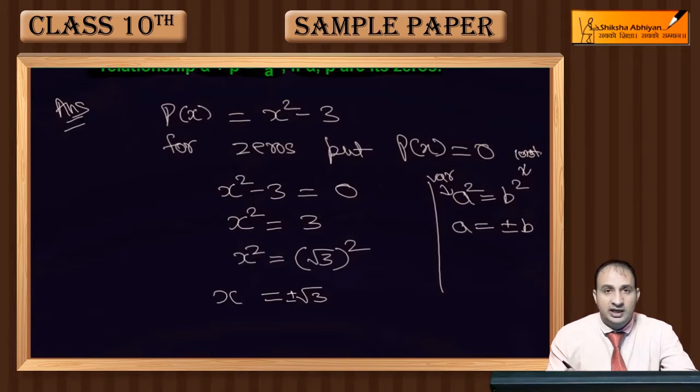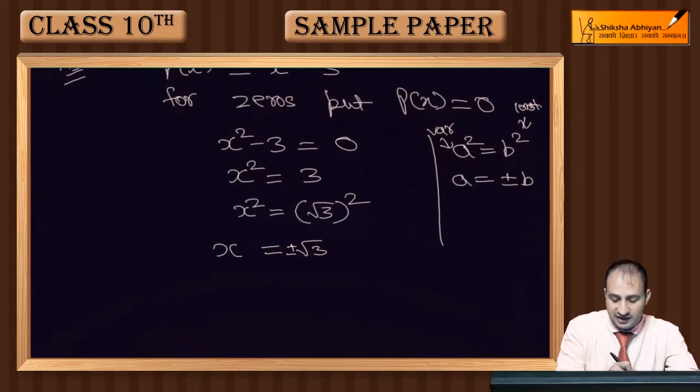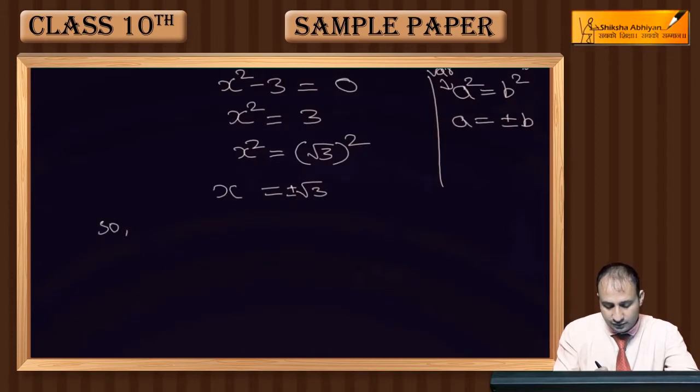If you square √3, you get 3, and if you square -√3, you also get 3. That's why we take both plus and minus values. So the zeros are √3 and -√3.